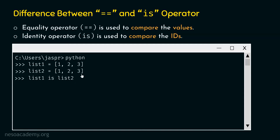But what happens if we type list1 is list2? We are asking: do these two objects have the same ID? If we hit enter, we get false. You might wonder why — we expected true because the objects are the same. But this is exactly the point where we need to understand the difference between equality and identity operators. `is` returns false here even though `==` returns true.